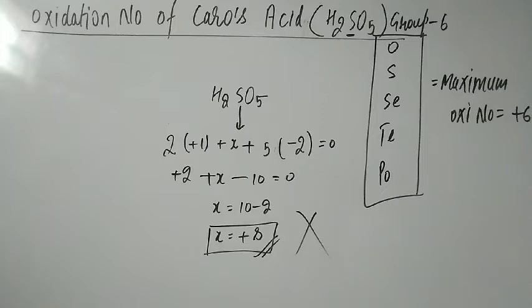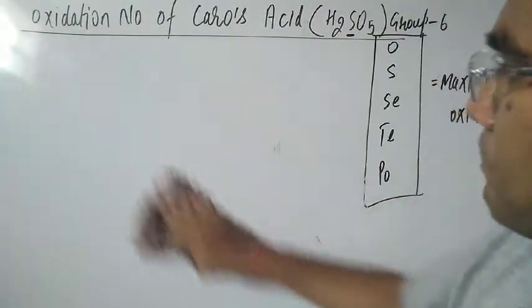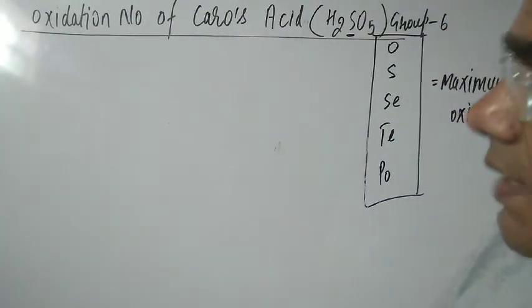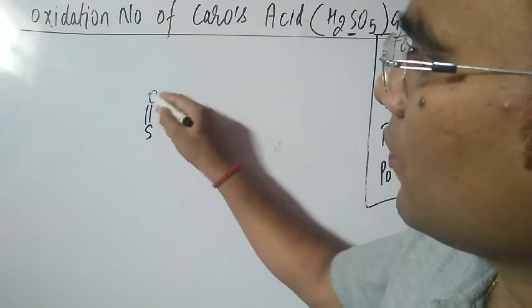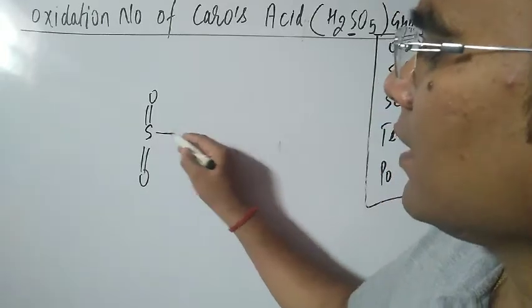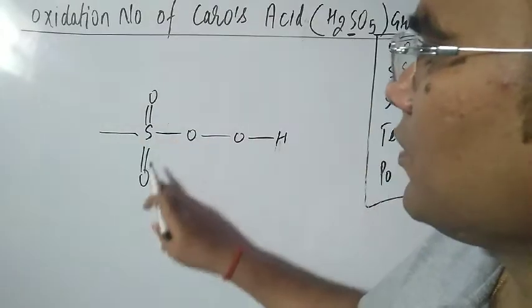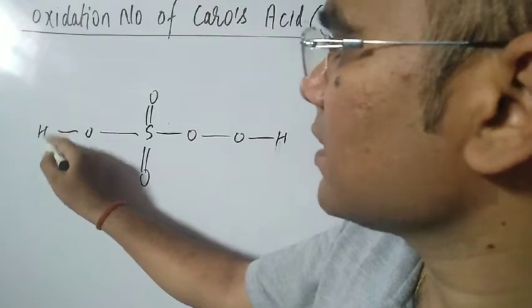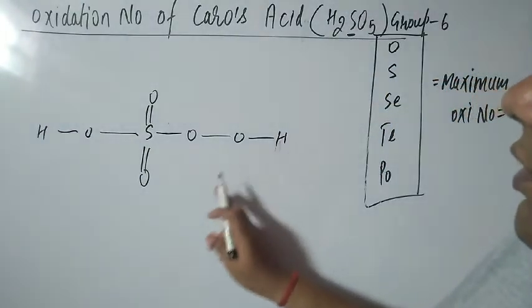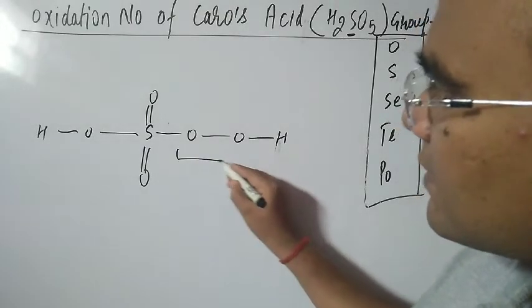Since this is an exceptional case, we need to draw the structure of the compound. The structure shows sulfur with double bond O, and additional oxygens and hydrogens. Total: 2 hydrogens, 5 oxygens, and 1 sulfur — and we can see this compound contains a peroxide linkage.